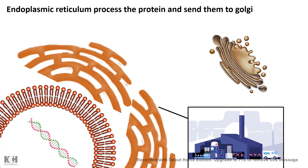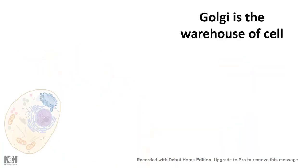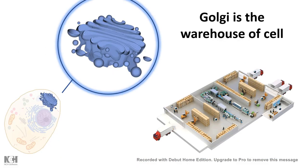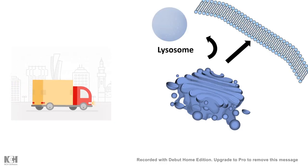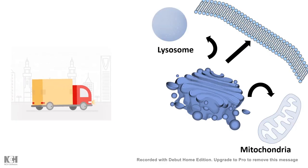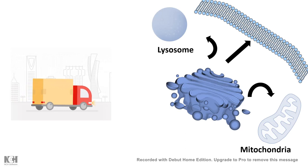We know that endoplasmic reticulum is a factory that folds protein, quality controls protein folding, and also delivers the protein to a warehouse, and that warehouse is Golgi apparatus. From the Golgi apparatus, these proteins are differentially sorted for delivery to either cell membrane, lysosome, mitochondria, or many other locations inside the cell.